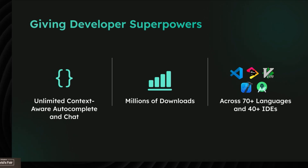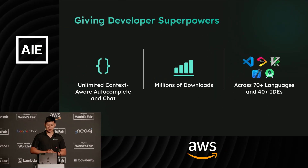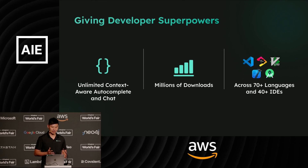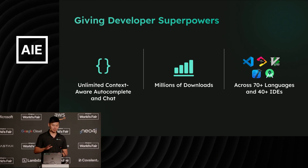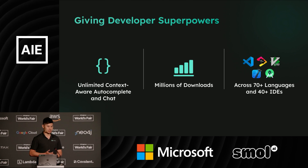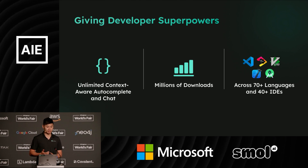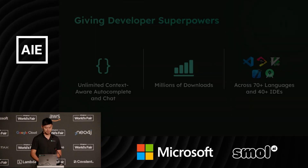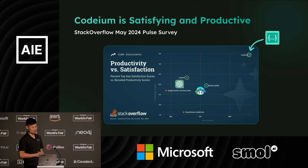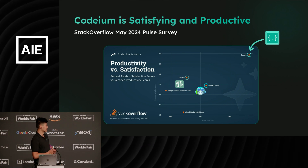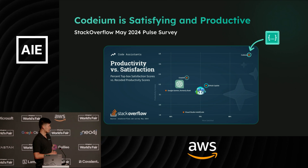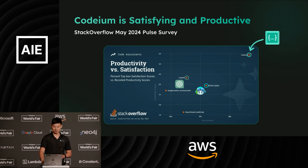We've been downloaded over a million and a half times. We're one of the top-rated extensions across the different marketplaces. We offer free, unlimited autocomplete, chat, and search across 70 different languages and 40 different IDEs, so we plug into all the popular IDEs. We are the highest-rated developer tool, as voted by developers in the most recent Stack Overflow Survey — even higher than tools like ChatGPT and GitHub Copilot.